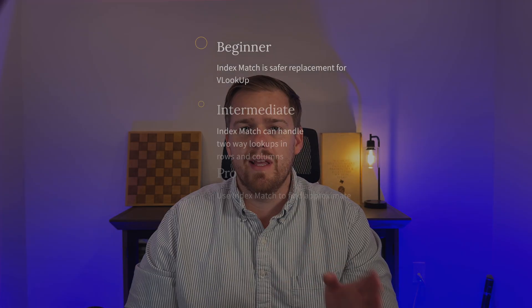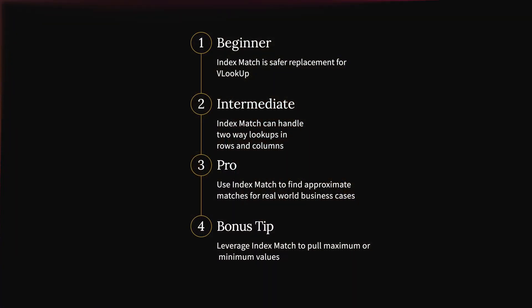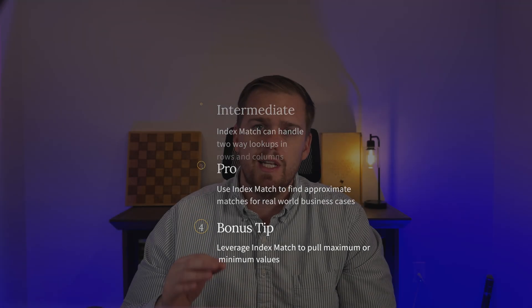Quick recap: in the beginner example, INDEX MATCH is a safer replacement for VLOOKUP. In the intermediate example, it handles two-way lookups across rows and columns. In the pro example, it powers approximate matches for real-world scenarios like bonuses or grading. And in the bonus example, we leverage INDEX MATCH to pull specific values from a data set. Once you learn this combo, you'll notice you've stopped relying on VLOOKUP altogether — because INDEX MATCH is flexible, dynamic, and future-proof.